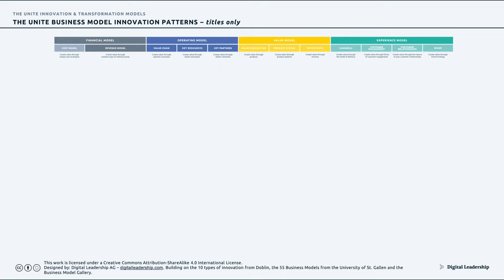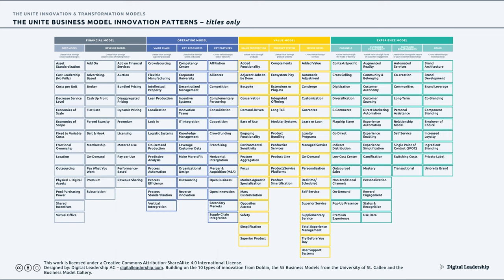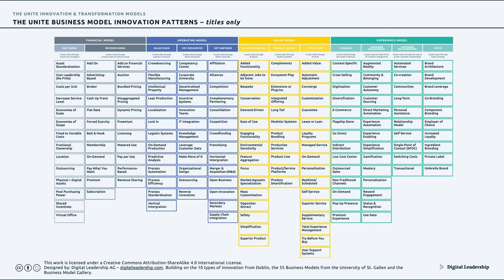Now you can suddenly see what the main patterns are in each of those areas. If you want to reinvent your revenue model, on the top left you could think about add-on pricing, switching to advertising-based pricing, a broker model, cash up front, a flat rate offering, creating false scarcity, premium pricing, subscription pricing, or optioning. Here you basically find 90 to 95 percent of the most important patterns of a business.